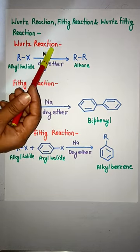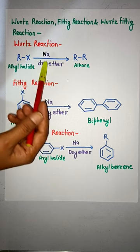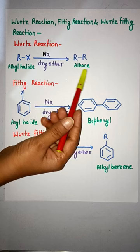Let's start with Wurtz reaction. When alkyl halide is reacted with Na dry ether, then alkane is obtained.